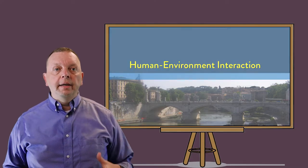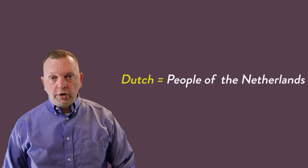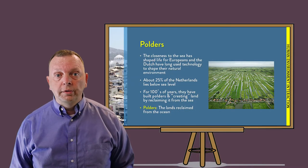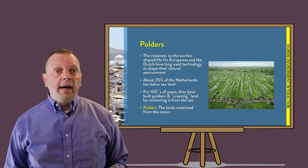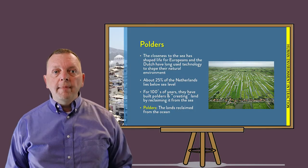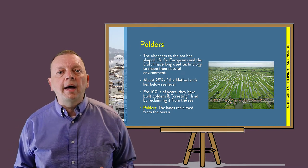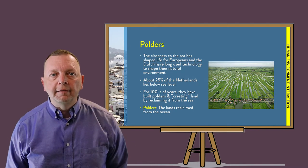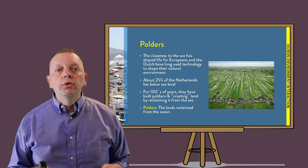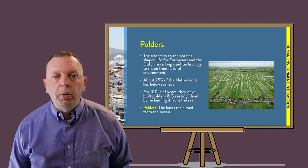One example is what we find in the Netherlands. A problem that the Dutch have — and the Dutch is the term we use for someone from the Netherlands — is that 25% of the Netherlands actually lies below sea level. This is quite problematic for a country that lies right on the coast of the North Sea. We often think of dikes or dams to prevent flooding, but it's far more than that.